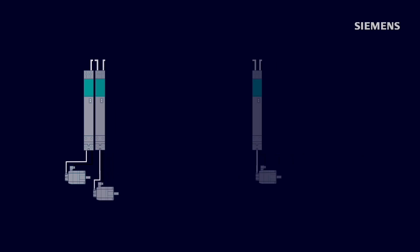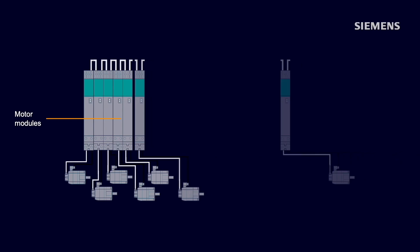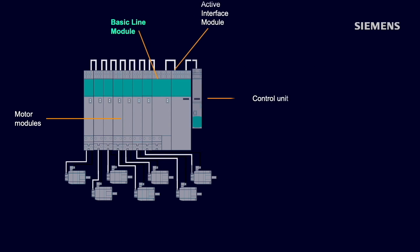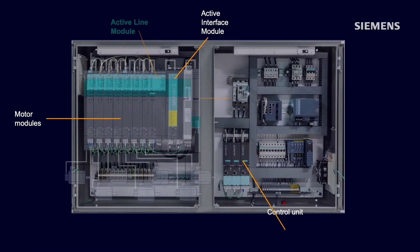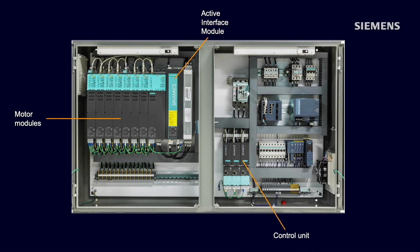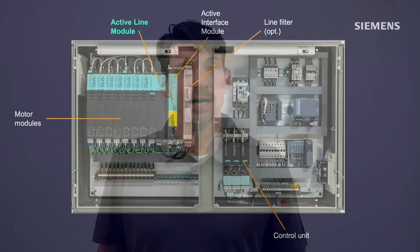As they are part of the S120 modular design, these different line modules can easily be implemented or changed if the need arises. This modular design also provides a very compact layout of the drive system. An example of this is shown here with the multi-axis book size format featuring the active line module with active interface module and optional line filter for C2 environments.